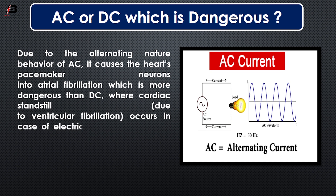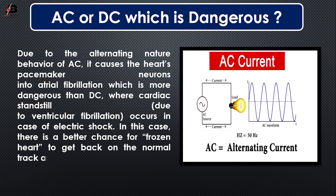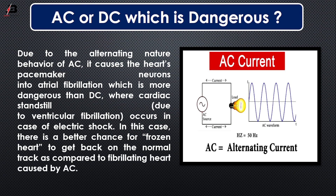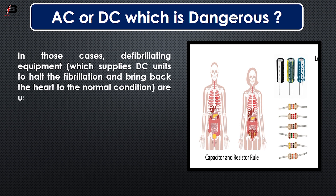In the case of a DC electric shock, there is a better chance for a stopped heart to return to normal compared to fibrillation caused by AC. In such cases, defibrillation equipment — which supplies DC pulses to halt the fibrillation and bring the heart back to normal — is used as an emergency medical service.